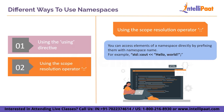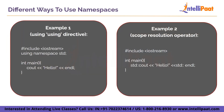The scope resolution operator links the namespace's element with the namespace name. You write the namespace name followed by the scope resolution operator and then the element name. In example one, 'using namespace std' is declared so we are free to use all elements of std like cout. In example two, cout and endl use scope resolution to identify themselves as elements of the std namespace.